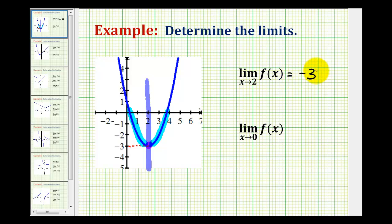It is important to note that even though f of 2 is equal to negative 3, that does not have to be true in order for this limit to exist. The idea of a limit is as we get closer and closer to positive 2 from both sides, what function value are we getting closer and closer to — not what it's equal to at the x value that we're approaching.